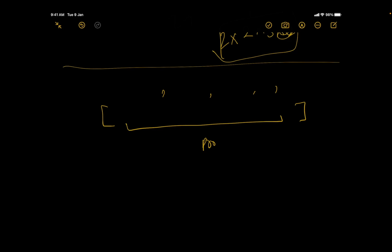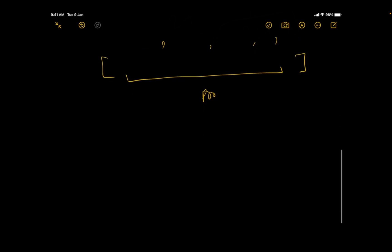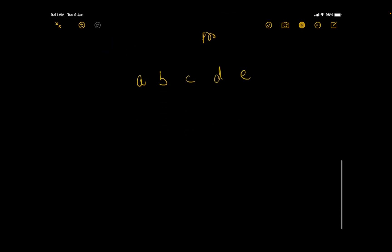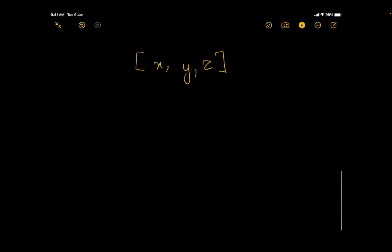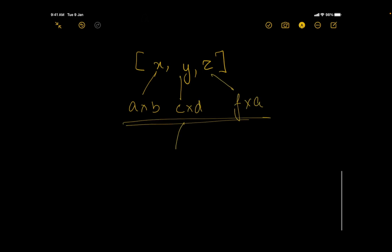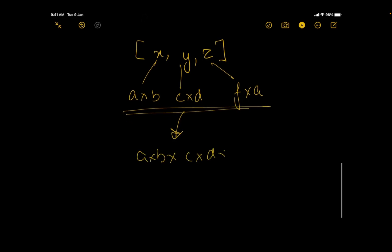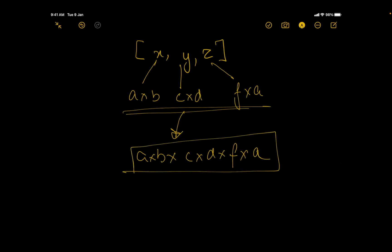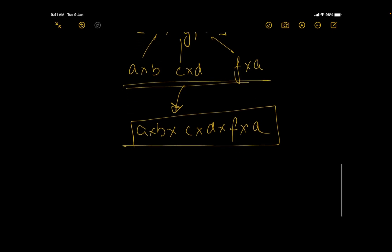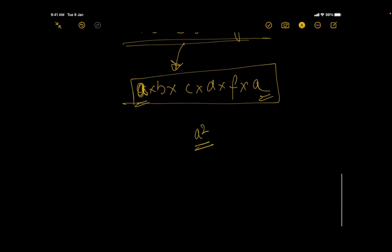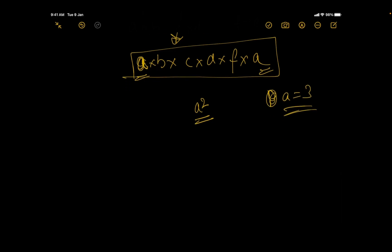A subset with elements x, y, z can be written as their prime factorizations. For example, x = a × b, y = c × d, z = f × a. The full product becomes a × b × c × d × f × a. Since prime 'a' appears twice, the product is divisible by a² — a square number. If a = 3, the product is divisible by 9, which makes it invalid.